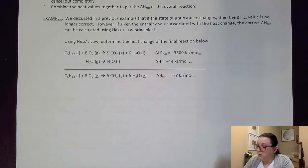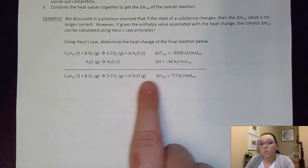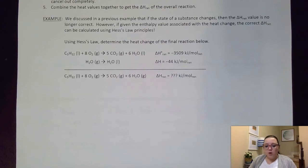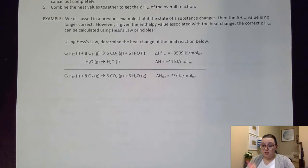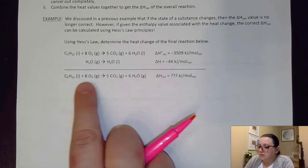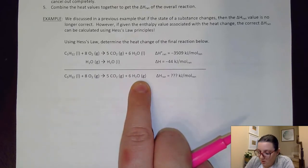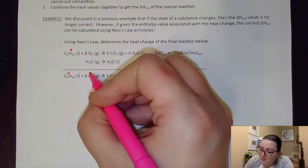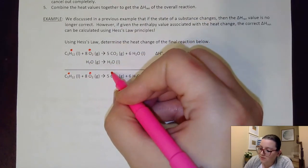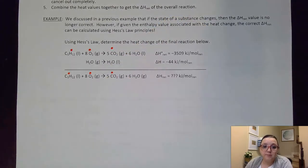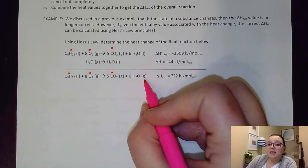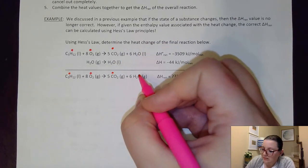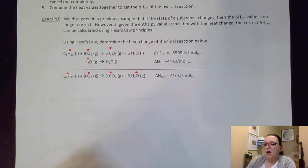We want to calculate the correct delta H of the reaction for this last equation. First, I want to see where these substances match up in each of these equations — I'm going to find in this final equation where each substance is located in the individual steps. The C5H12, the 8O2, and the 5CO2 are all in that first step. The 6H2O as a gas is located in this second step here. I notice there are some issues with that, which we'll talk about in just a minute.